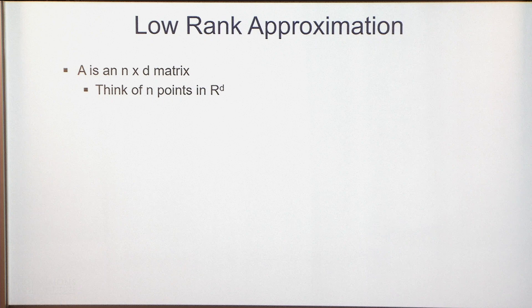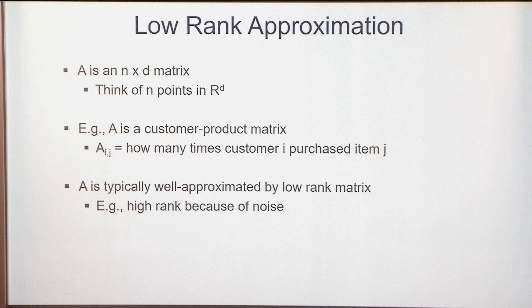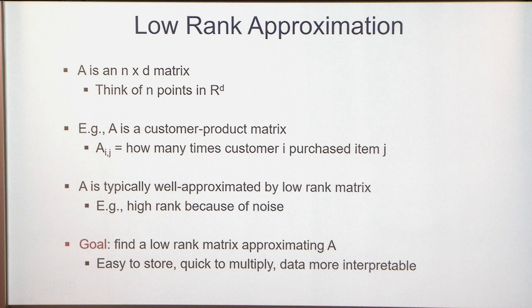We're given an N by D matrix A. Think of the N rows of A as being points in R^D. For example, A might be a customer-product matrix where A_ij indicates how many times customer i purchased item j. In many applications, A is well approximated by a low-rank matrix — there might be some underlying latent variable model. The goal is just to find a low-rank matrix approximating A.